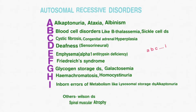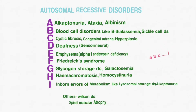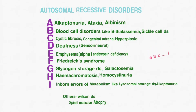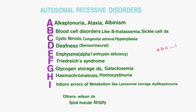A stands for Alkaptonuria, Ataxia, and Albinism. B stands for Blood Cell Disorders like Beta Thalassemia and Sickle Cell Anemia. C stands for Cystic Fibrosis and Congenital Adrenal Hyperplasia. D stands for Deafness of the Sensorineural type. E stands for Emphysema, i.e. alpha-1 Antitrypsin Deficiency.